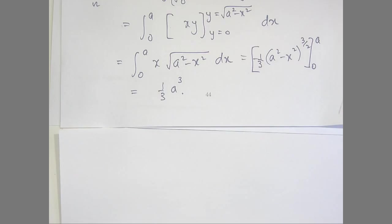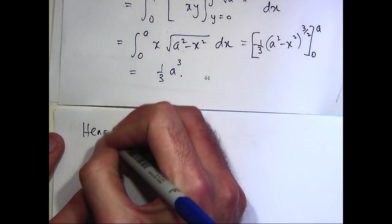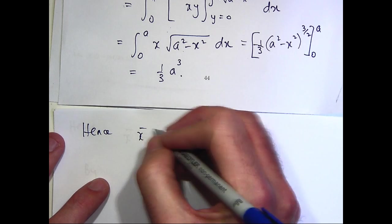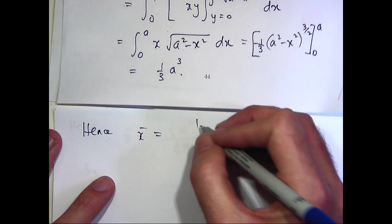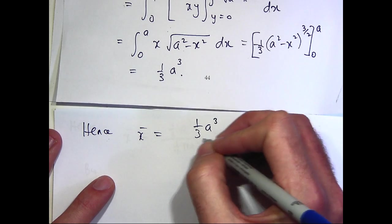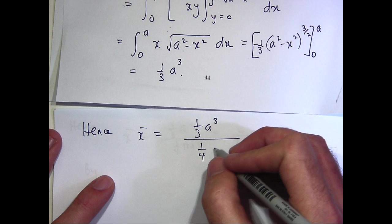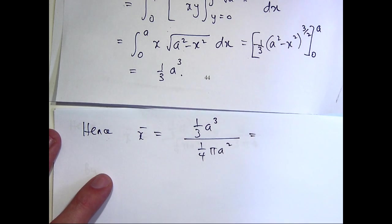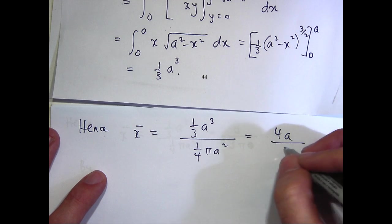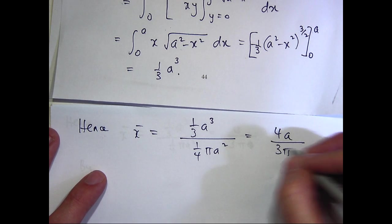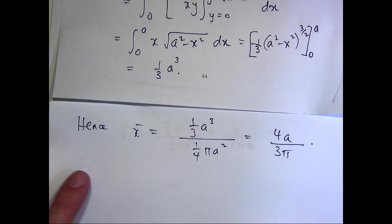Okay. Okay, so, so if I divide one into the other, it's just, so what I'm going to get there, I'm going to get something like 4a on 3 pi. Are you happy with that? Now by symmetry, y bar's got to be the same as x bar, because it lies on that line of symmetry.